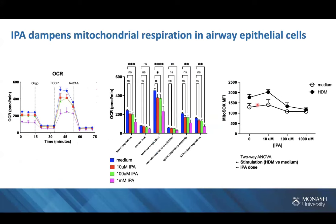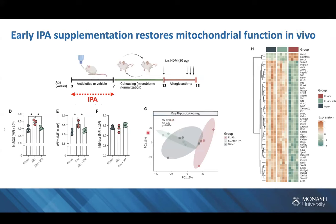We did shotgun metagenomics and could see that the genes involved in tryptophan metabolism to IPA were also reduced in the microbiome of animals that had antibiotic treatment. We could really link the fact that antibiotics had changed the microbiome, which changed the metabolic pathways present, with the consequence of having a reduction of this metabolite in the circulation. When we took IPA and tested it using human airway epithelial cells, we looked at the effect of IPA on respiration and mitochondrial superoxide production. When we stimulate these epithelial cells in vitro with house dust mite or LPS, we see an increase in superoxide production. As we titrate in the IPA, we reduce that — and we can see the same with respiration. So in vitro and in human cells, IPA can function to reduce mitochondrial superoxide.